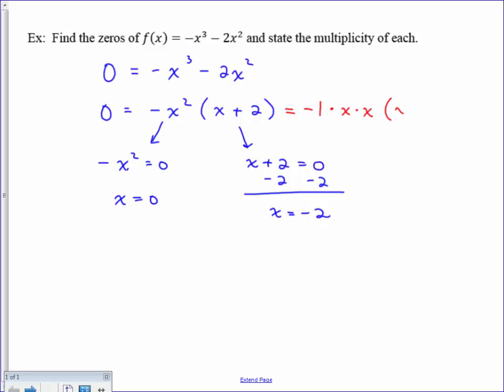And then we have an x plus 2 factor. Now, the x plus 2 factor is very different than the x factor. Notice there that that factor is only written one time, while these guys are actually written twice. We can tell that by looking at the original exponents.